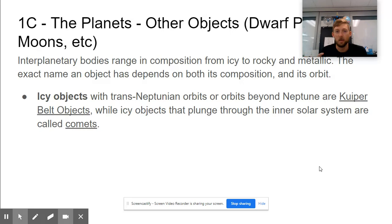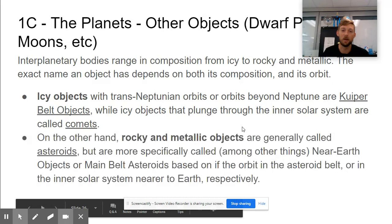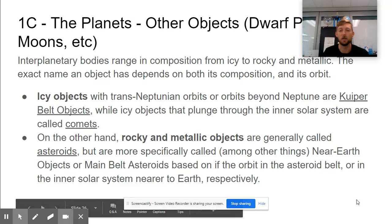So icy objects are comets. If they're beyond Neptune, they're called Kuiper Belt objects. Even though they're both made of the same thing, ice, depending on where they are, they're called different things. Rocky and metallic objects are called asteroids in general.